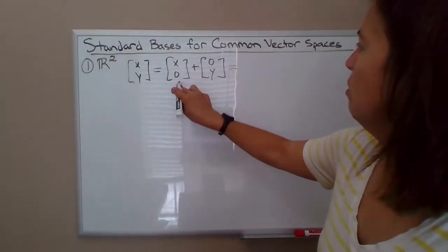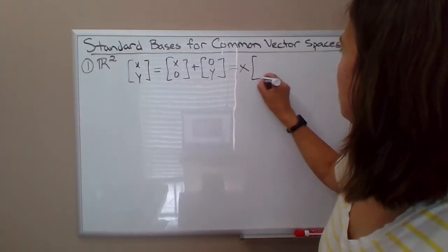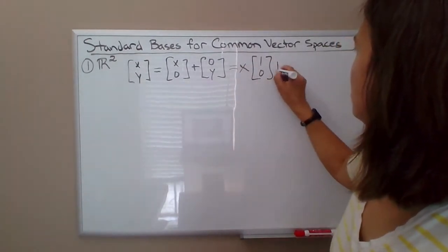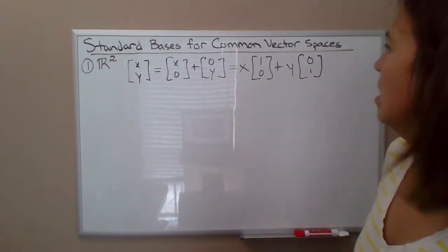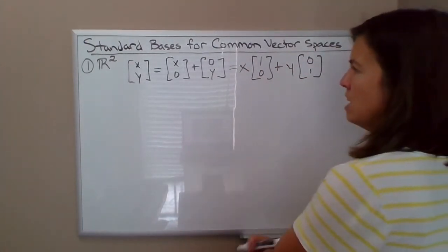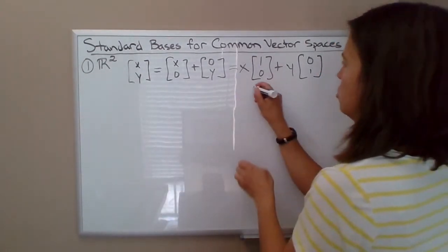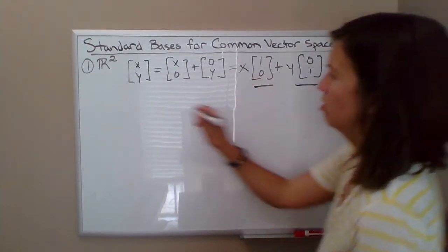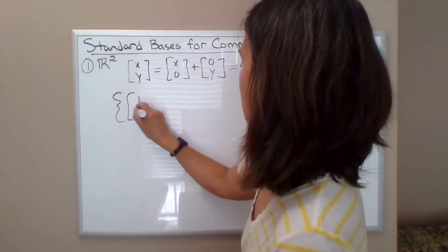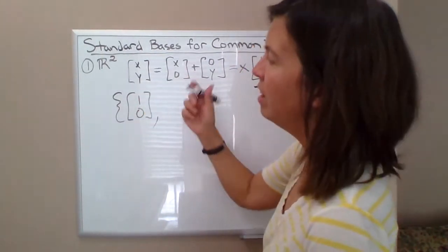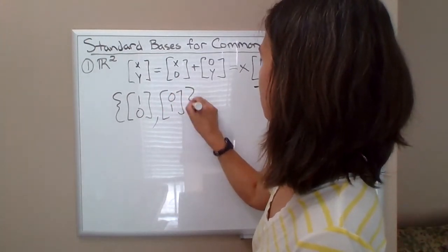And then in this vector here, I could take out this scalar x times the vector 1,0. In the second one, take out the scalar y times 0,1. And so what I'm saying here is that any vector in R² can be written as a linear combination of these two vectors. So my candidate for a standard basis, in fact, the standard basis for R² is the collection containing these two vectors.